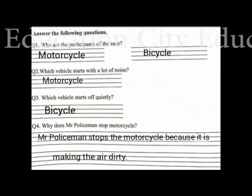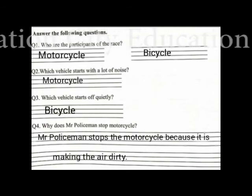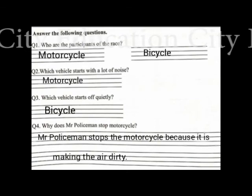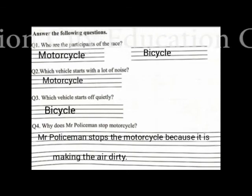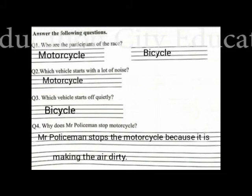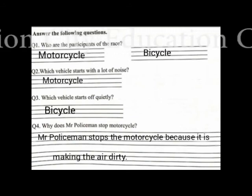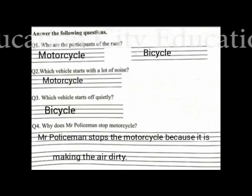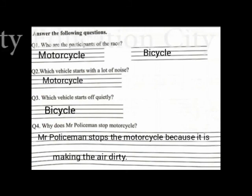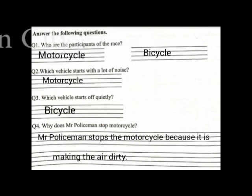All right students, have you written down all the answers? Let's check: who are the participants of the race? — motorcycle and bicycle. Which vehicle starts with a lot of noise? — motorcycle. Which vehicle starts off quietly? — bicycle. Why does Mr. Policeman stop the motorcycle? — because it is making the air dirty. Remember to do your work neat and clean. Stay safe and sound.